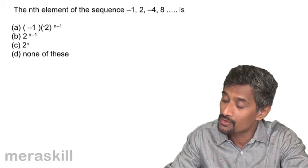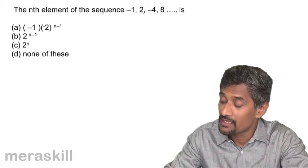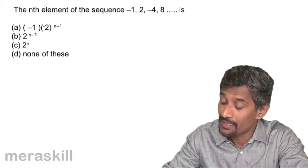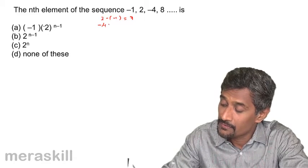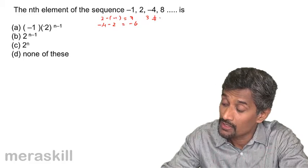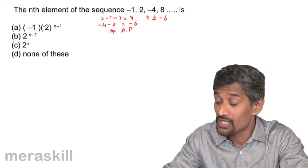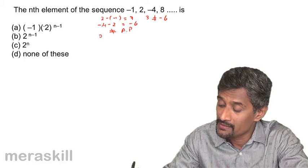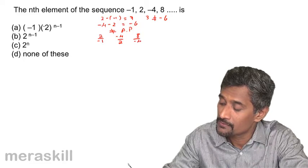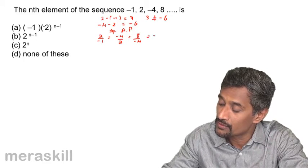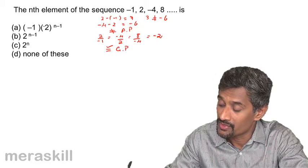Here we have another interesting example: the nth element of the sequence -1, 2, -4, 8, and so on. We check if it is an AP: 2 minus (-1) is 3, and -4 minus 2 is -6. Since 3 is not equal to -6, it is not an AP. We then check if it is a GP: 2/(-1), -4/2, 8/(-4) — all equal -2, so this is a geometric progression.